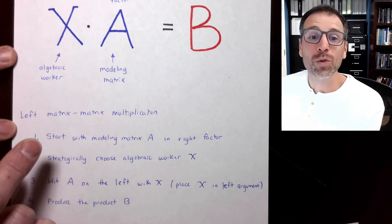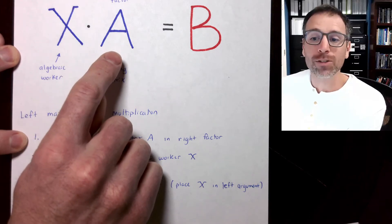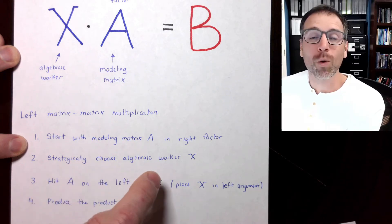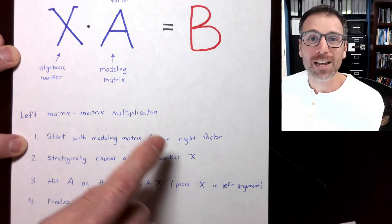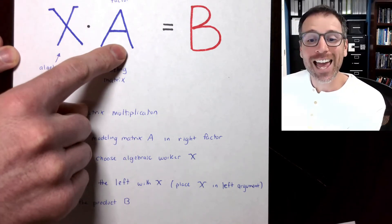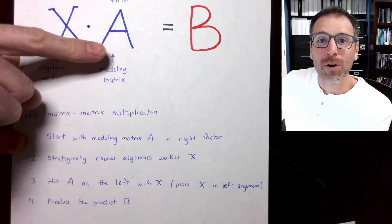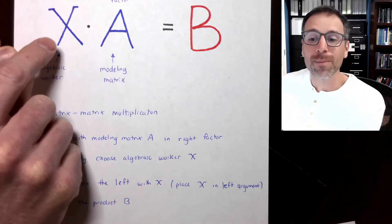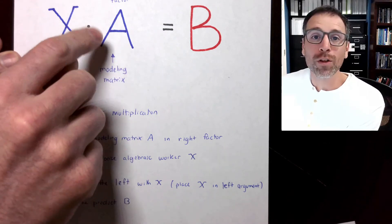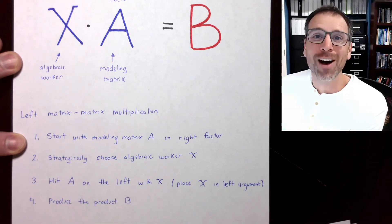Let's recap what it means to do left matrix-matrix multiplication. We start with some modeling matrix in the right factor of our product. We strategically choose some algebraic worker matrix X to perform a special operation on matrix A. Then we hit A on the left — we place X in the left argument — then run the algorithm to compute the output matrix B.